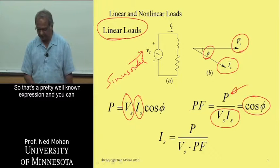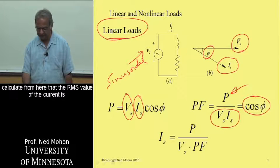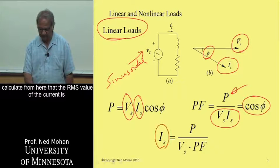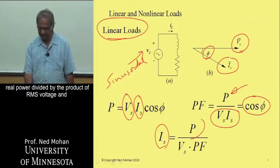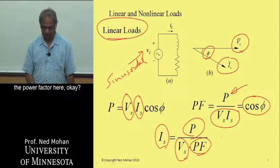So that's a pretty well-known expression, and you can calculate from here that the RMS value of the current is real power divided by the product of RMS voltage and the power factor here.